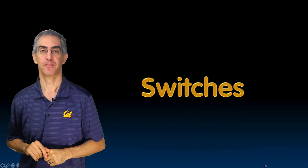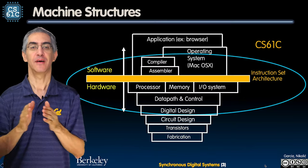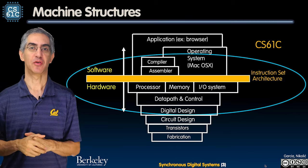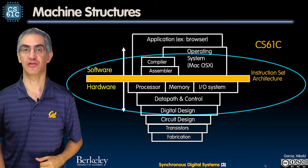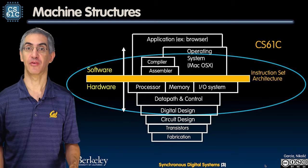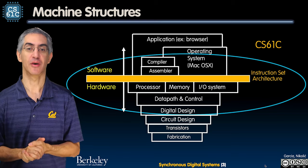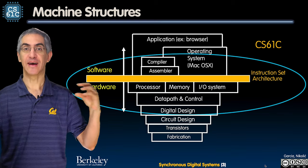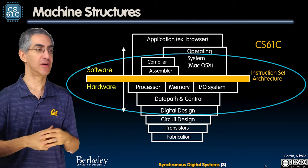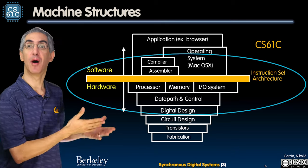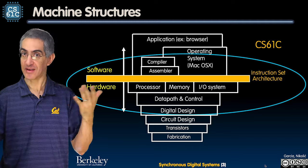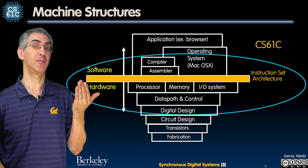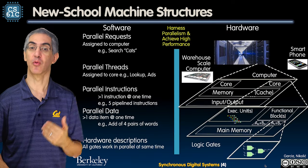We're going to talk about switches. This is the picture you've seen before — the layers of abstraction we talk about in machine structures. This course is called Machine Structures, or the Great Ideas in Computer Architecture. The action happens around the middle, the ISA, the Instruction Set Architecture. We work our way down from the top and up from the bottom to teach you how a complete computer works. These lectures start from the bottom and work our way up.